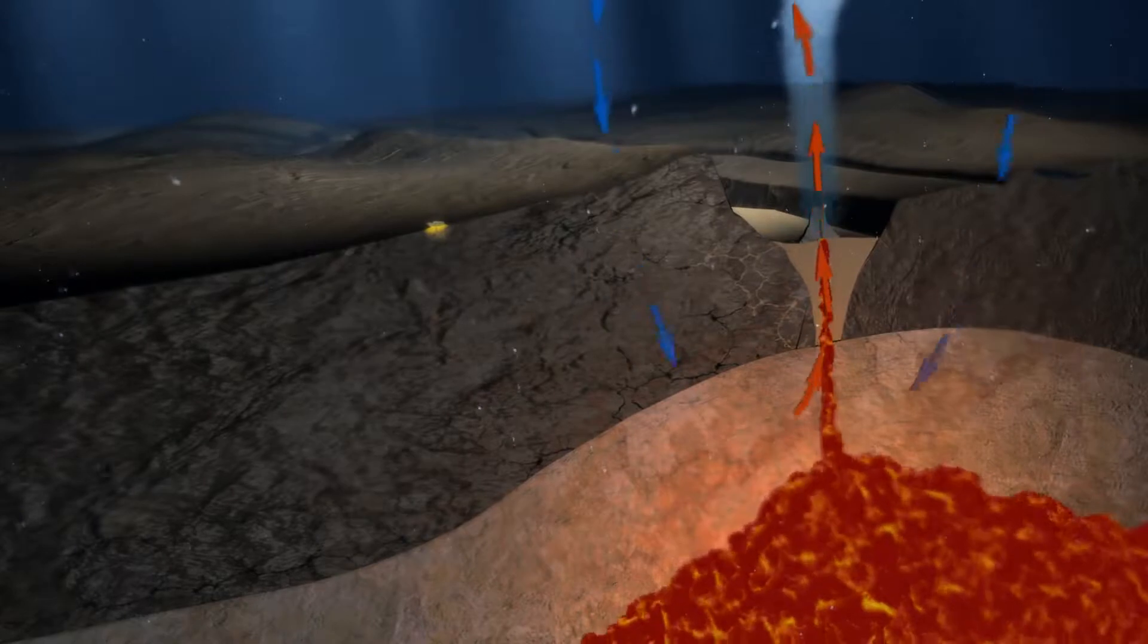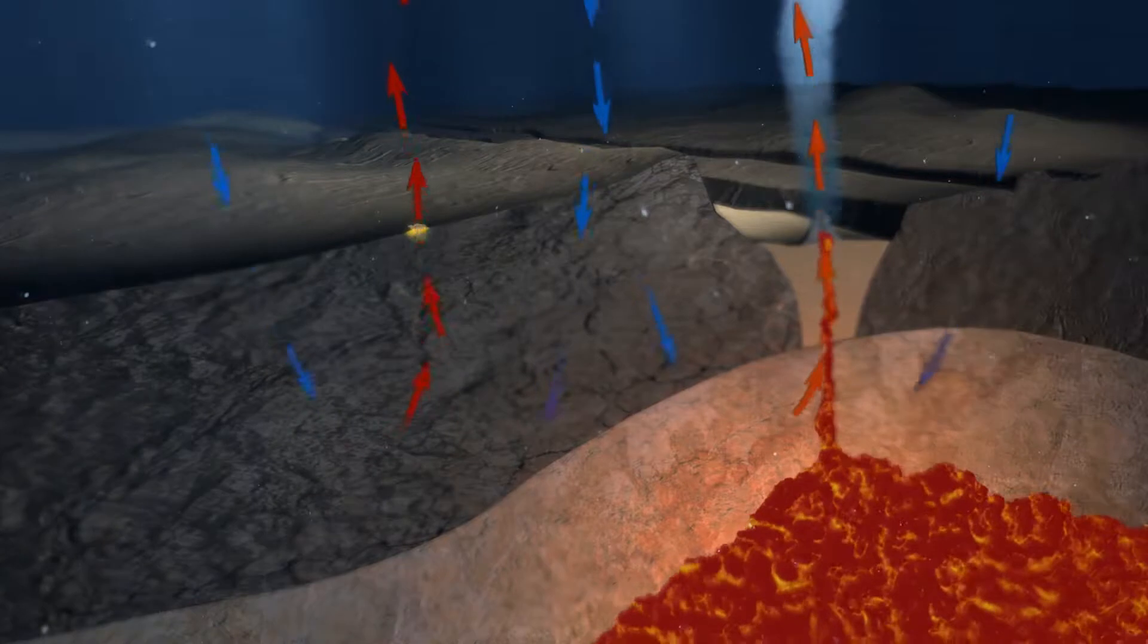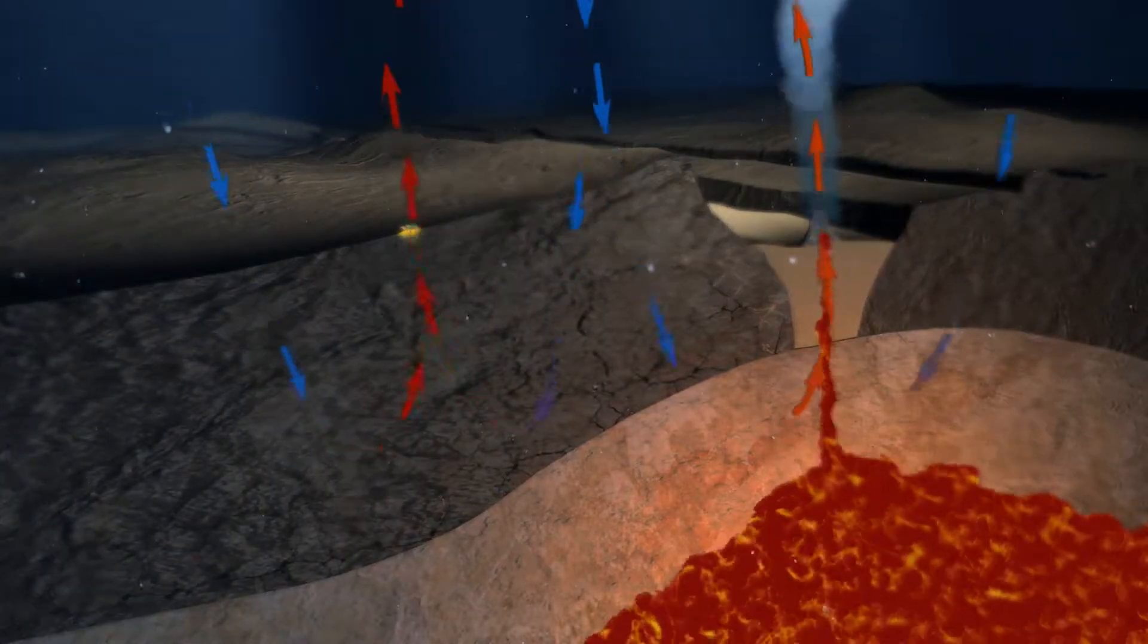On the left, we see convection at Lost City. The water does not come into contact with magma, so effluent at Lost City is much cooler, around 70 to 90 degrees.